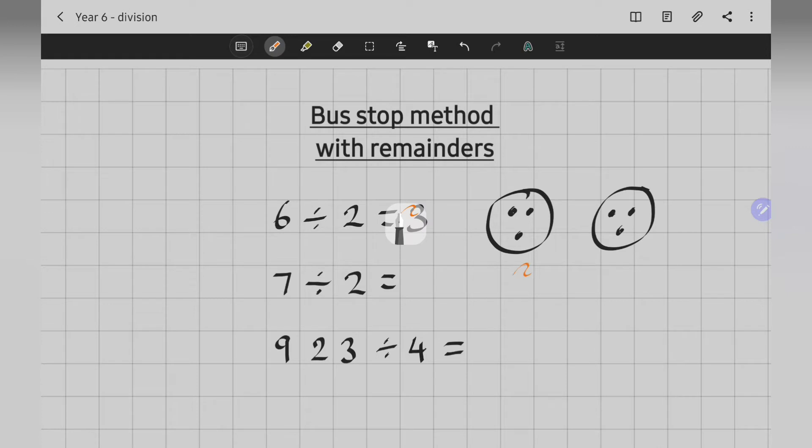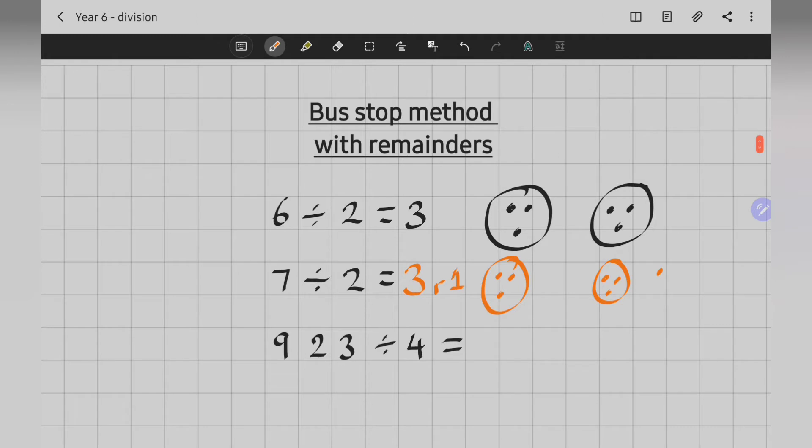7 divided by 2, 2 equal groups. But this time, I can't make them equal. I've got 1 left over. So my answer's still 3, but I've got a remainder of 1. 1 left over. That's going to be really important for my sums today.